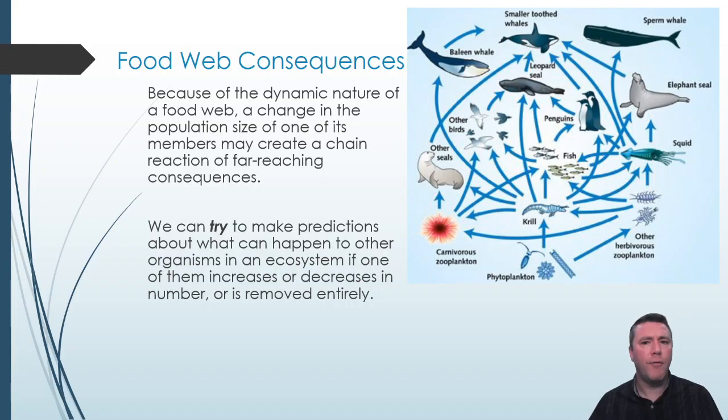But wait! If the other seals' population increases, that means more food for smaller-toothed whales, which means they eat more elephant seals, and greater numbers of their food, the fish, survive, which in turn eat more krill, driving their numbers down. It should be clear that predicting and keeping track of every possible consequence is nearly impossible, and a great way to give yourself a headache if you tried to do so.